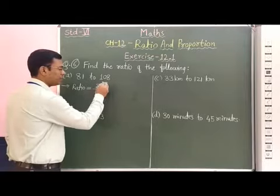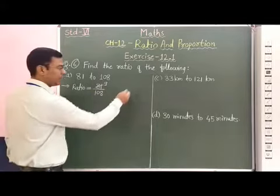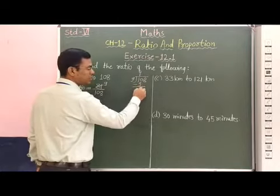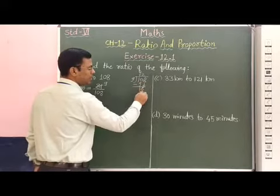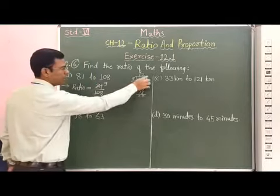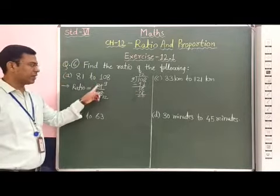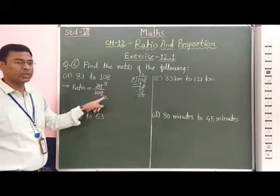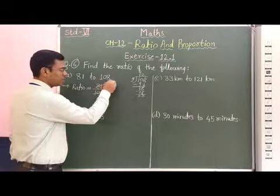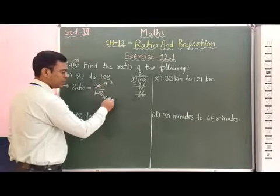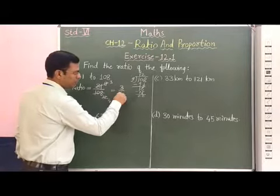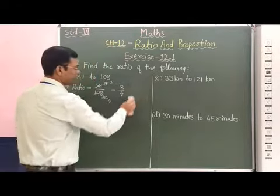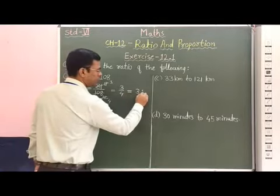9 times 9 is 81. If we divide 108 by 9, the quotient is 12. Therefore, if you divide numerator and denominator by 9, we get 9 by 12. Now, if you observe, 9 and 12 are both divisible by 3. So 3 into 3 is 9, and 3 into 4 is 12. Therefore, this is equal to 3 by 4.